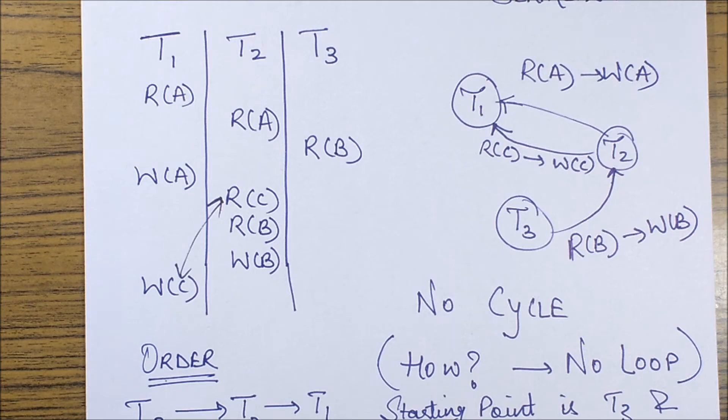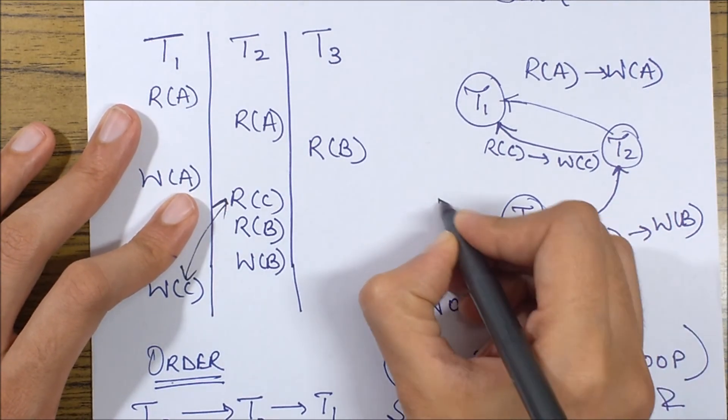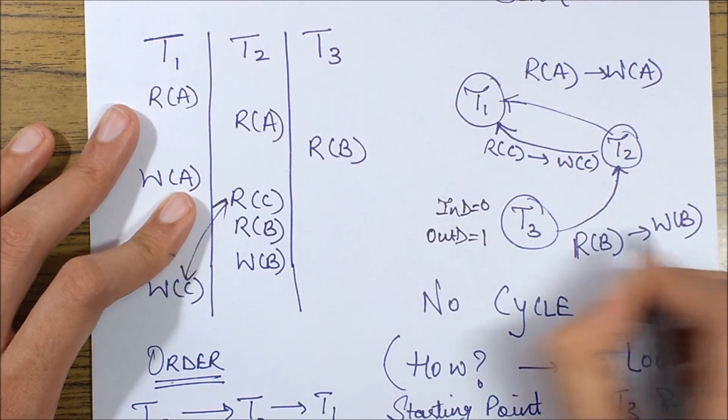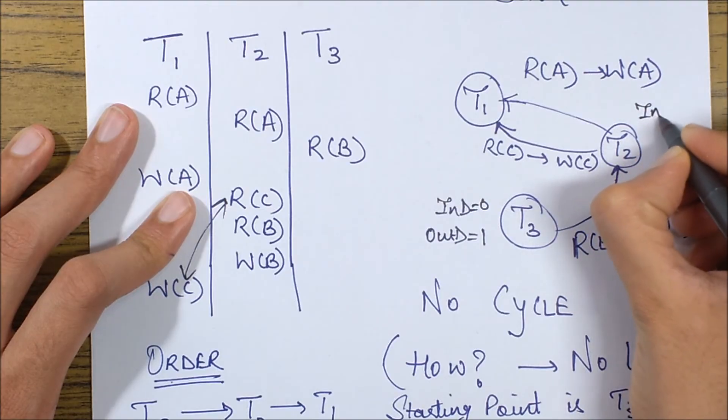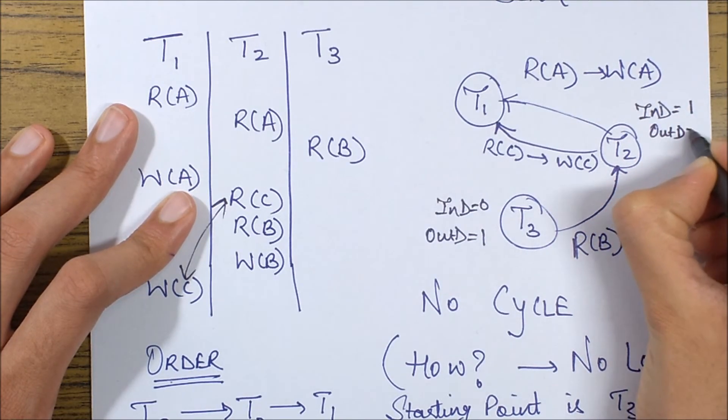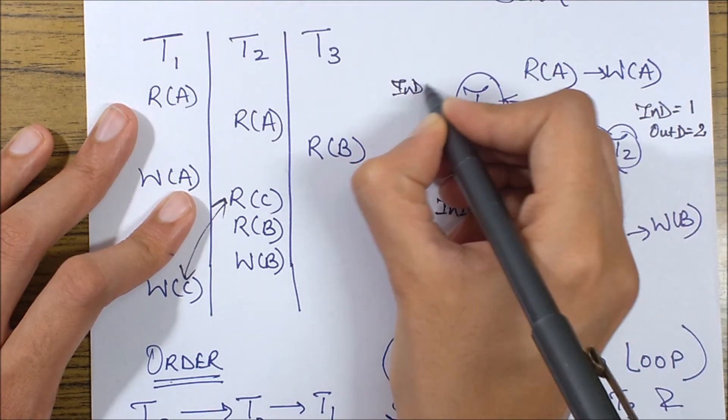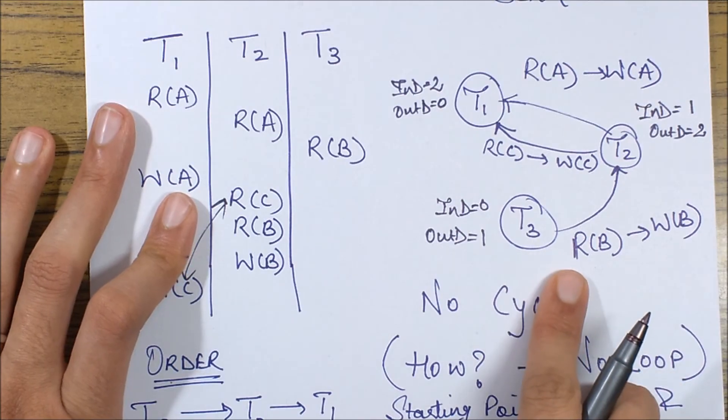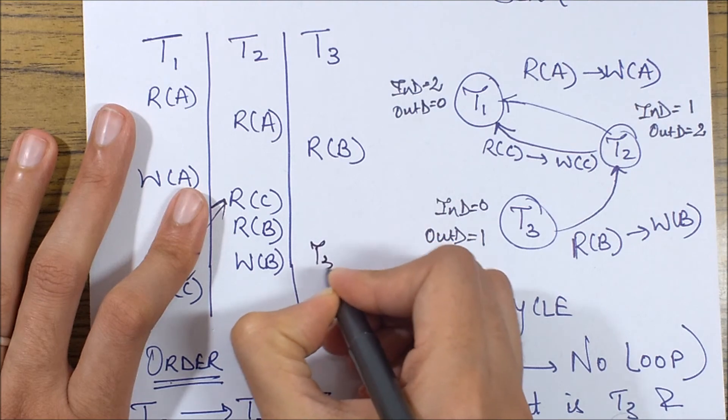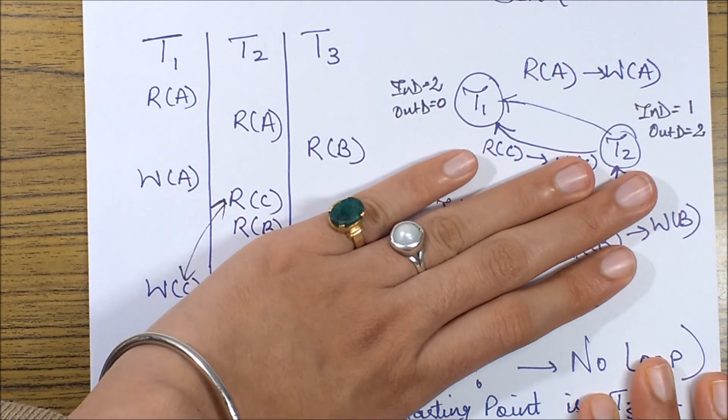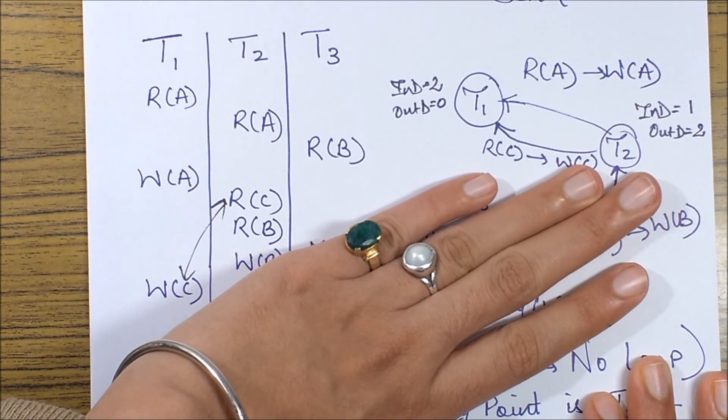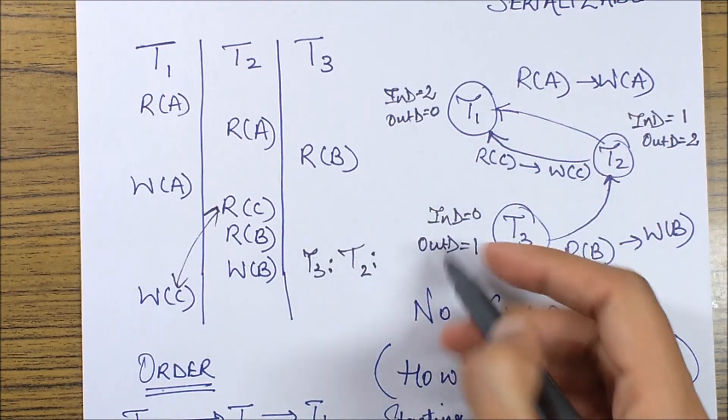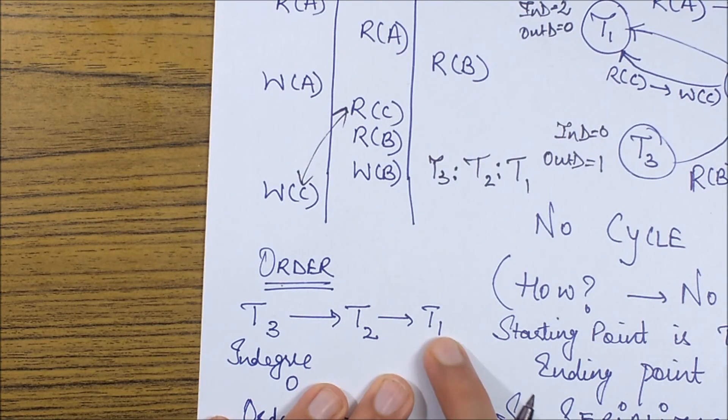So now we have the serializable schedule and how do we find the order? First of all we check for the node with in-degree 0. So let's just label the nodes with their degrees. This node has in-degree 0 and out-degree as 1 because it has one edge moving outward. This node has in-degree 1 and out-degree 2. This node has in-degree 2 and out-degree 0. So I'll be starting with this node T3. So I'll just write down the order as T3, then I remove this node T3 and all the edges moving out from it. The next node with in-degree 0 would become this T2. So the next transaction will be T2 and finally we'll only be left with T1. So the order is T3, T2 and T1.